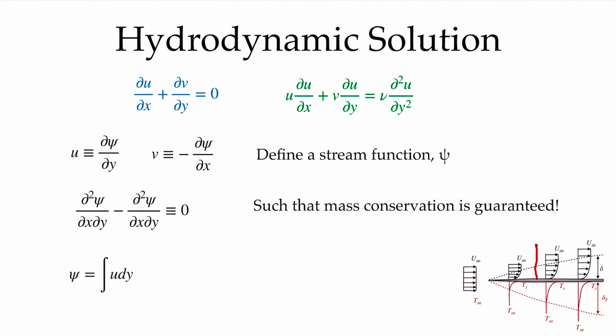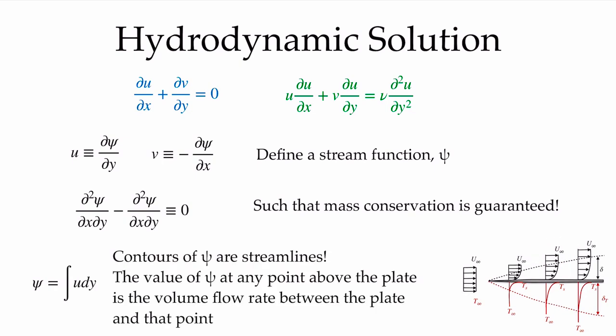The stream function at every point represents the volume flow rate between the flat surface and that particular point. If we connect points that have the same value of psi, we draw streamlines — lines through which no mass or volume flow passes. So contours of psi are the streamlines of the flow, and the value of psi at any point above the plate is the volume flow rate between the plate and that point.